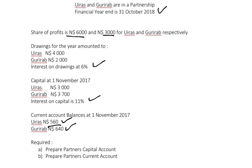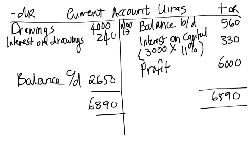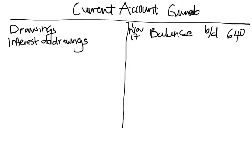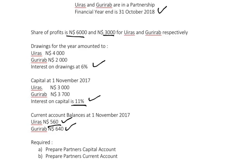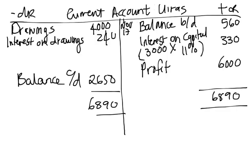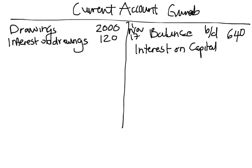Drawings for Gurirap are $2,000, recorded on the debit side. Interest on drawings is 6% × $2,000 = $120, also on the debit side. For interest on capital, Gurirap's opening capital was $3,700 at 11%, so interest on capital is $3,700 × 11% = $407, recorded on the credit side.